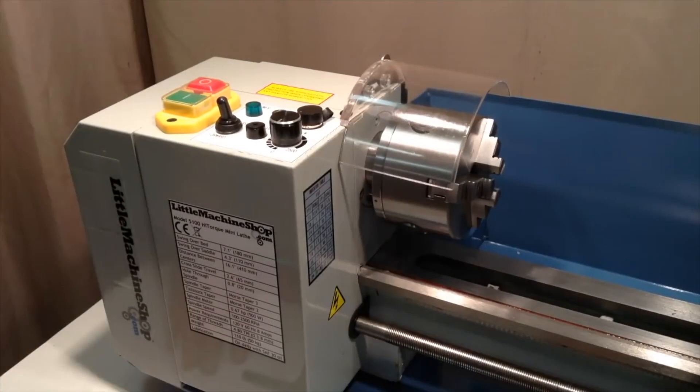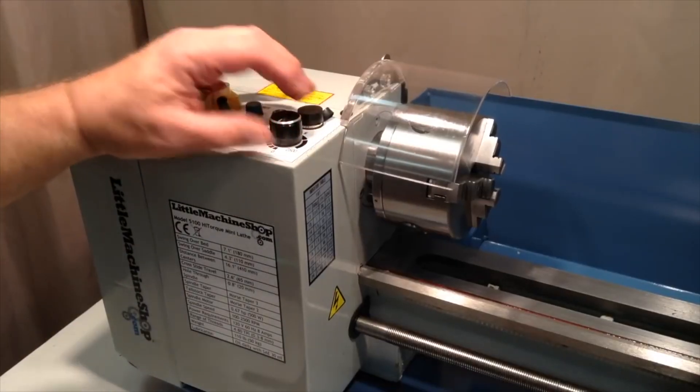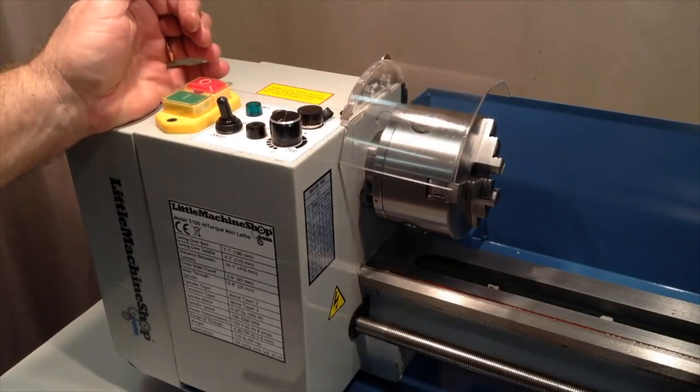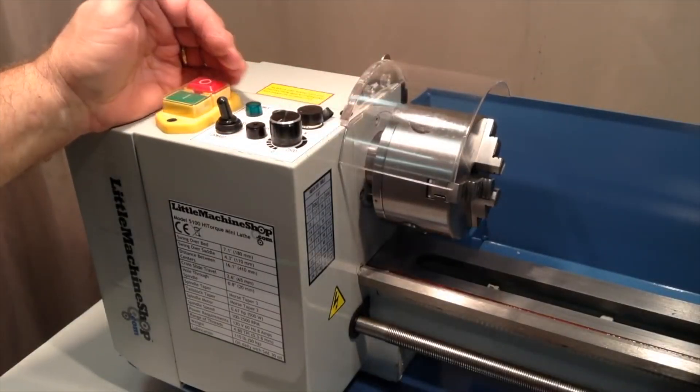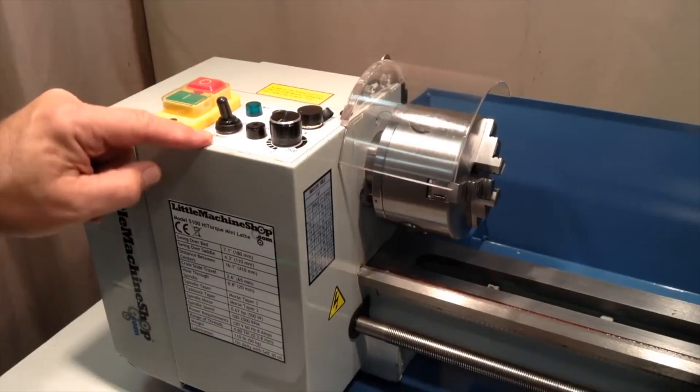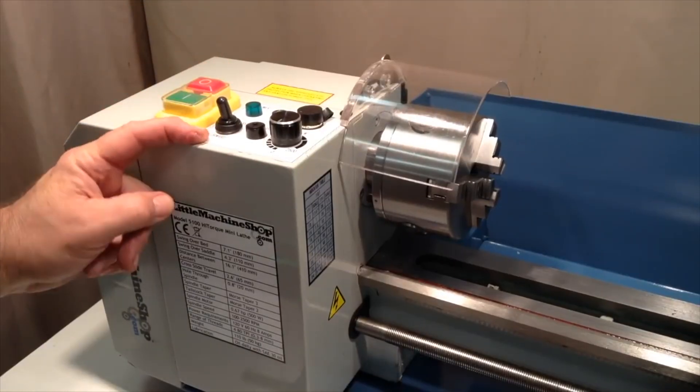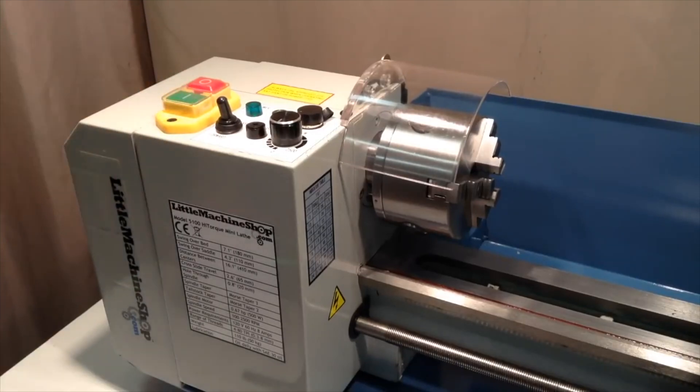So now having made sure of those things, we're ready to turn on the power and start it up. First turn your speed control all the way counterclockwise to the zero setting. That will ensure that the chuck doesn't start up unexpectedly when you turn the power on. Make sure this forward reverse switch is in the forward position, which is towards you, and then go ahead and press the green power on button.